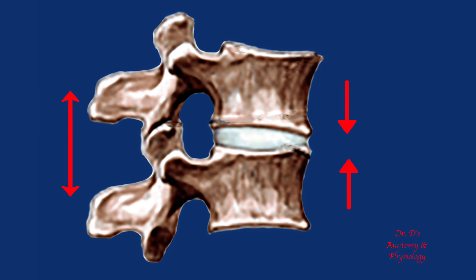Notice that the degree of movement achieved between two vertebrae does not seem very great. However, when you add up the movement that occurs at each intervertebral disc along the length of the column, the effects add up, enabling the wide degree of movement that the vertebral column is capable of. The nature of these intervertebral discs and how they're designed will be discussed at greater length in other videos.